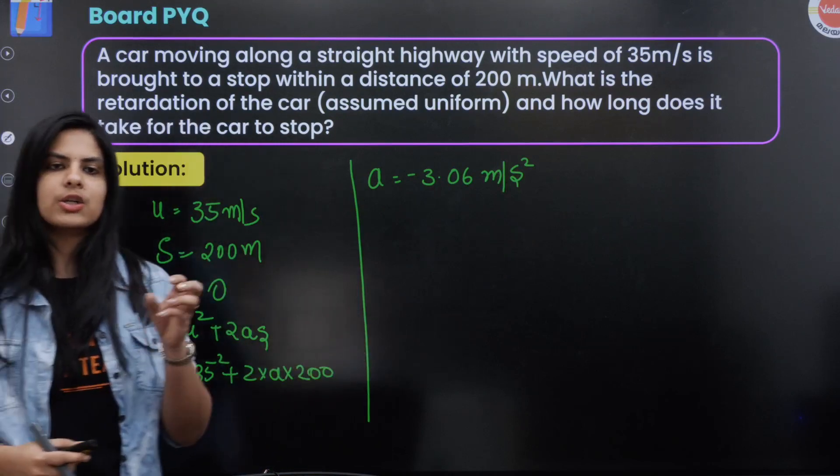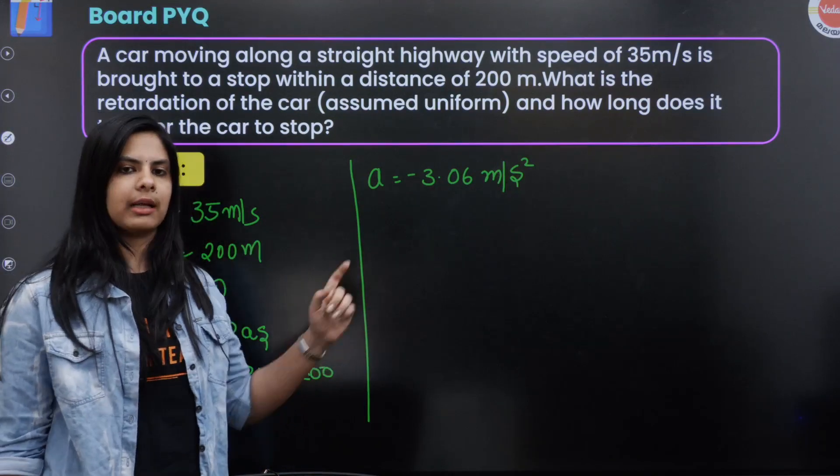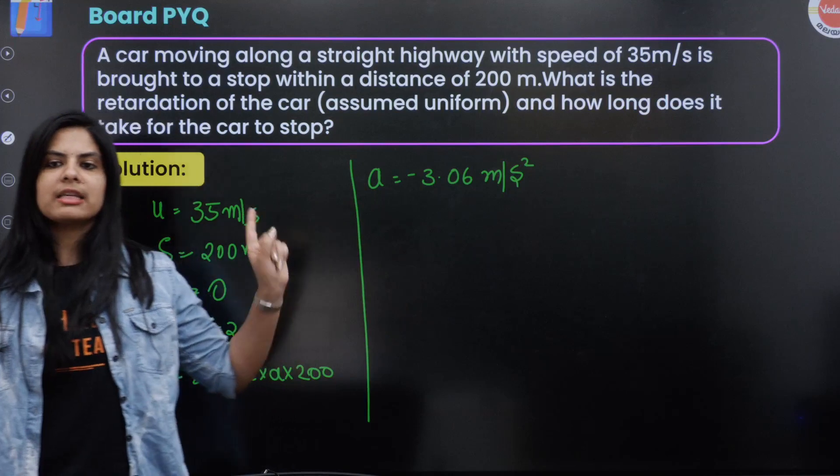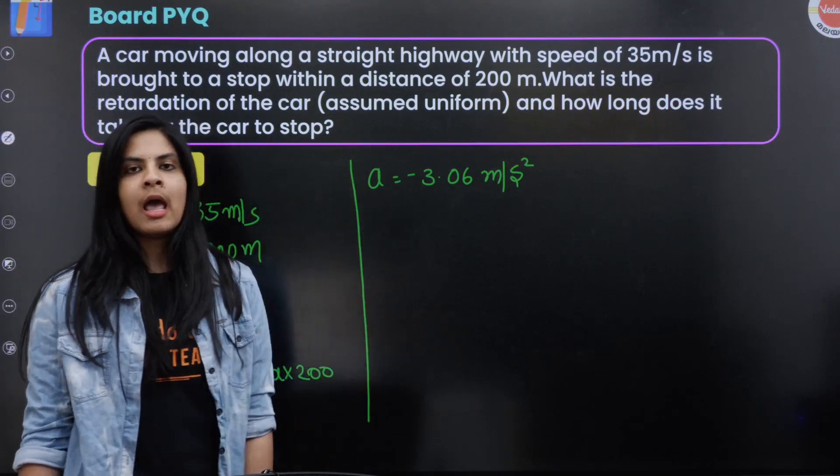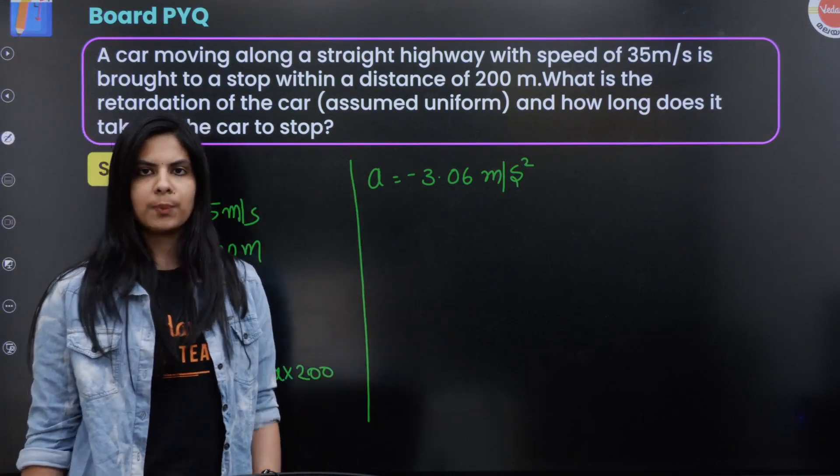So the retardation is -3.06 meters per second squared, or ms⁻².